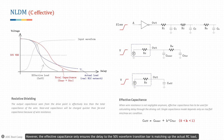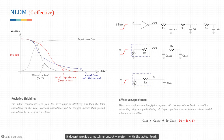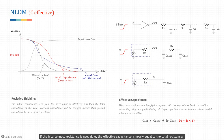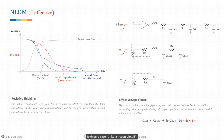However, the effective capacitance only ensures the delay to the 50% waveform transition bar is matching the actual RC load; it doesn't provide a matching output waveform with the actual load, so the accuracy of transition from this method is not considered. Because of the interconnection resistance, the capacitance seen from the driver output is actually smaller than the total cap on the wire — this effect is called resistive shielding. If the interconnect resistance is negligible, the effective capacitance is nearly equal to the total resistance. If the interconnect resistance is very large, the effective capacitance is almost equal to the near-end capacitance.